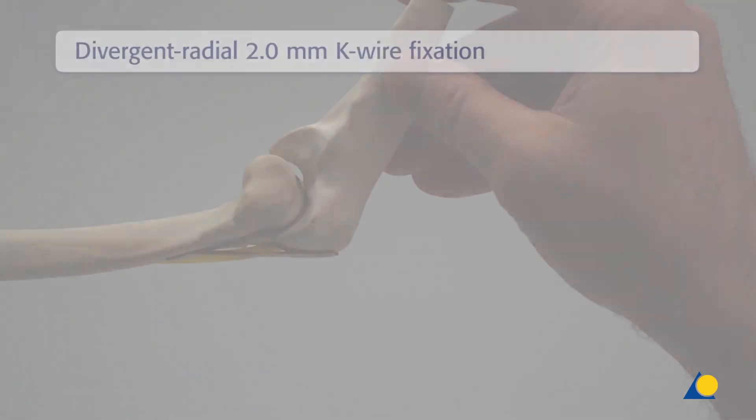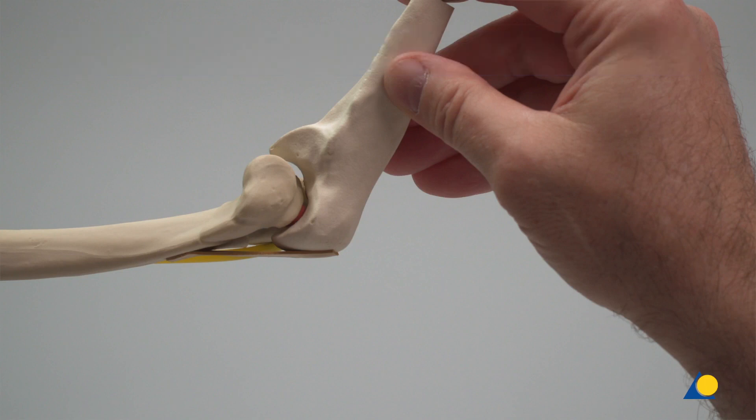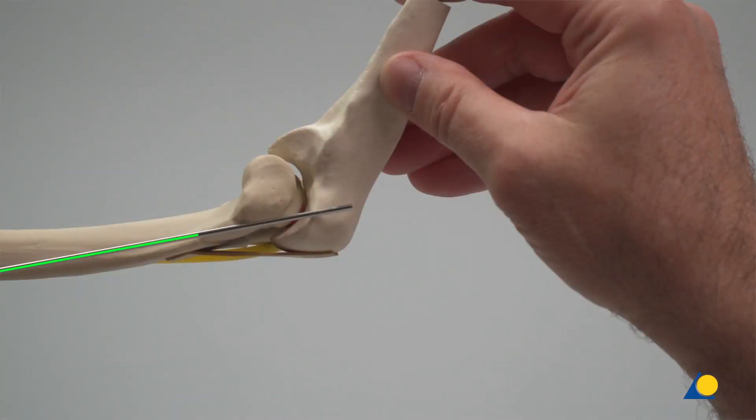The divergent radial technique using 2.0 mm K-wires from the radial direction will now be demonstrated. In the clinical situation, a small incision or a direct puncture with the K-wire is made over the planned entry point. 2.0 mm K-wires provide increased stability and this technique allows them a high level of insertion precision.